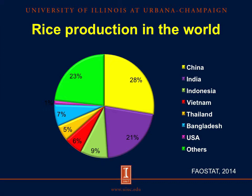The United States produces almost 10 million tons, which represents less than 1.5% of the total world production. However, the United States is the fifth largest exporter of rice after Thailand, India, Vietnam, and Pakistan. In the United States, the production of paddy rice is concentrated in Arkansas, California, Louisiana, Texas, and Missouri.